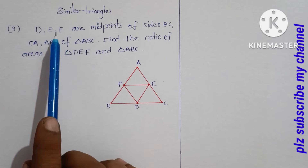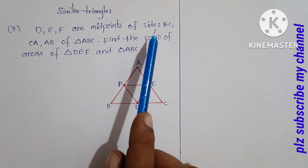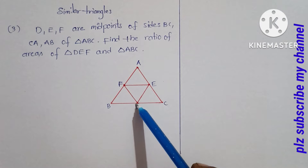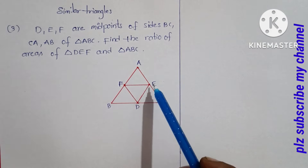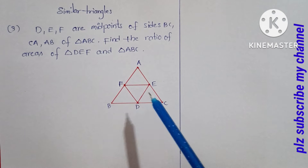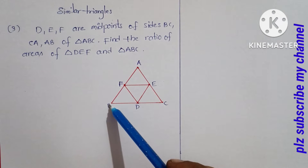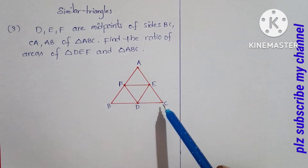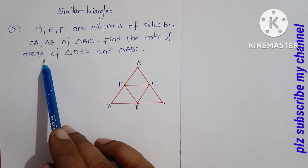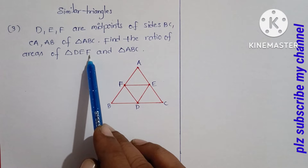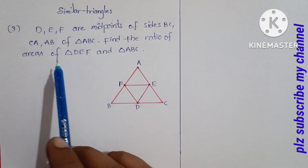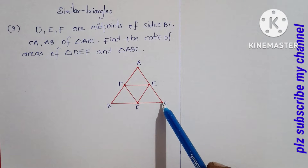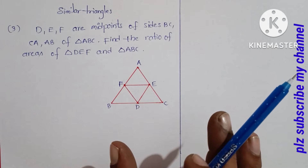Similar triangles. In triangle ABC, D, E, F are midpoints of sides BC, CA, and AB respectively. D is the midpoint of BC, E is the midpoint of AC, and F is the midpoint of AB. We need to find the ratio of areas of triangle DEF and triangle ABC.